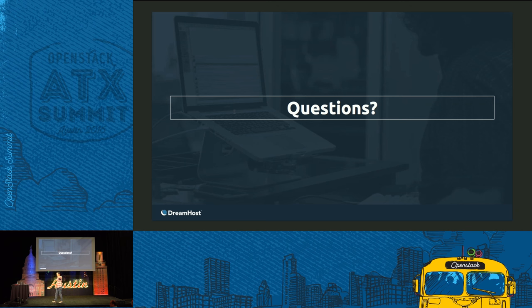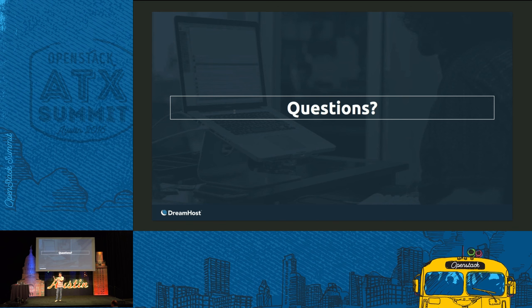Question: I'm already a DreamHost customer — how do I get the new cluster? If you're already a DreamHost customer, log into your DreamHost panel, go to the DreamCompute section, and activate it. This is also true if you're not yet a customer — you can sign up, go into the panel, and activate DreamCompute. You convert from the old pricing model into the new utility billing plan, which gives you access to everything. You still get access to the legacy cluster at a lower price point, and you instantly get access to the new region we're calling US East 2.